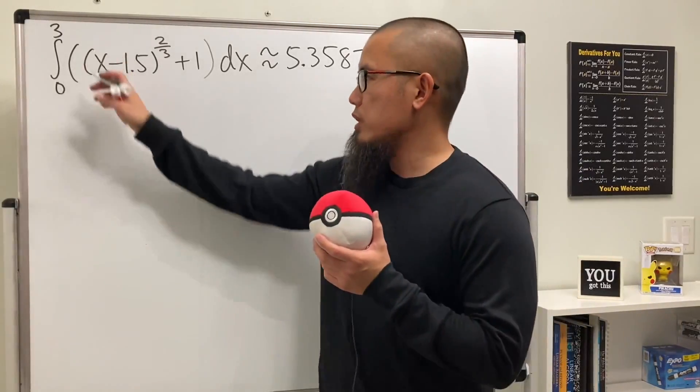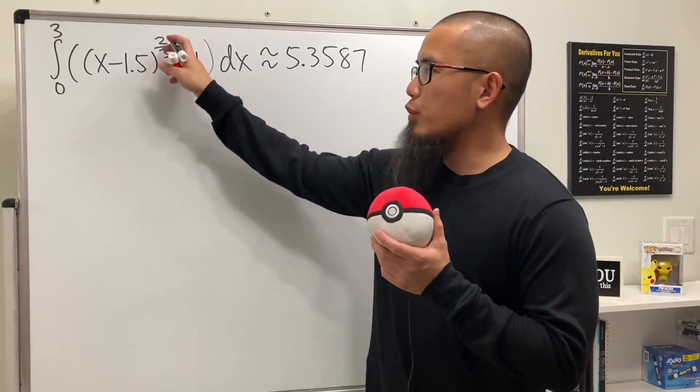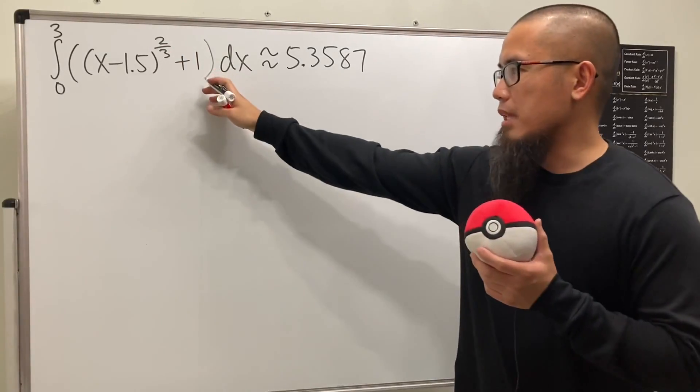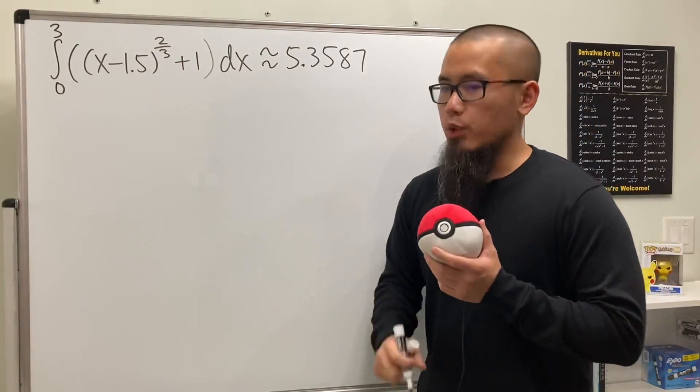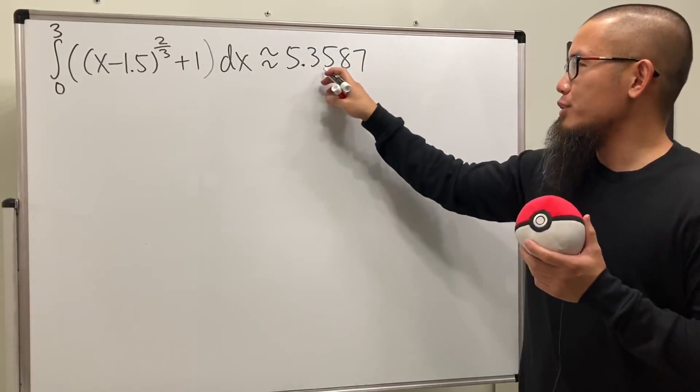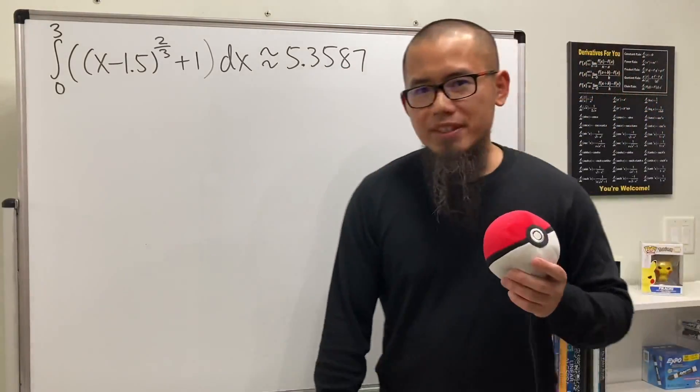We are given the integral from 0 to 3 of (x - 1.5) raised to the 2/3 power plus 1. If we use a calculator, we will get about 5.3587.